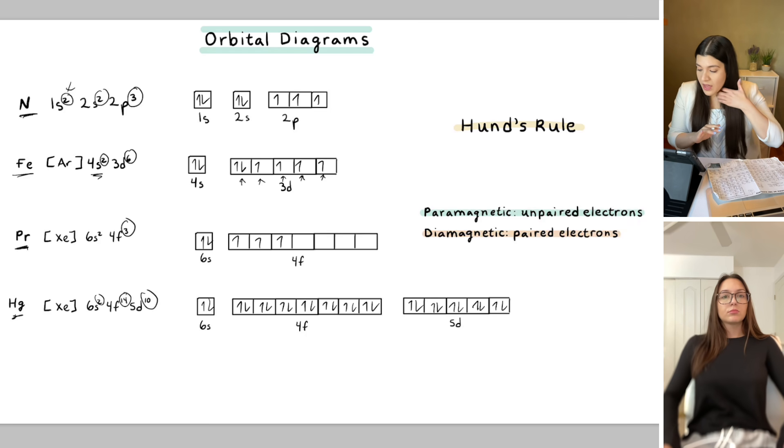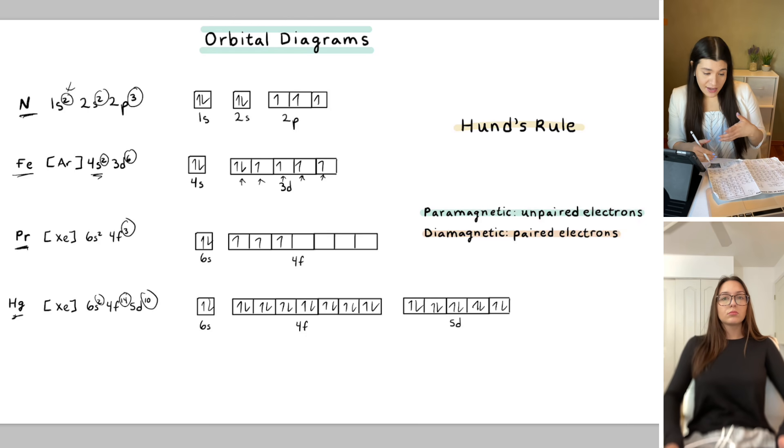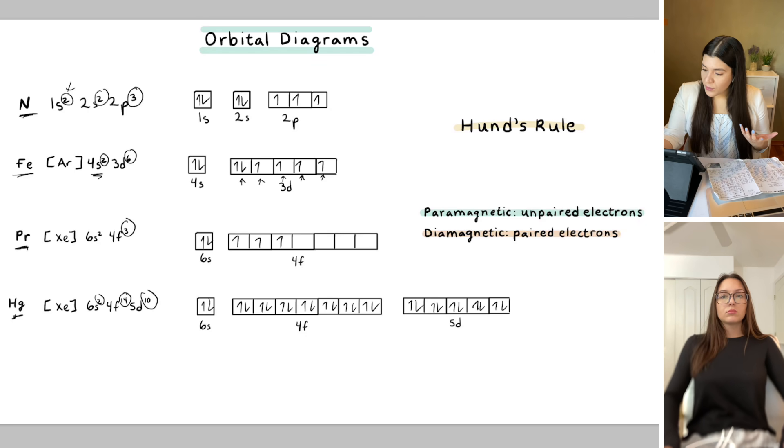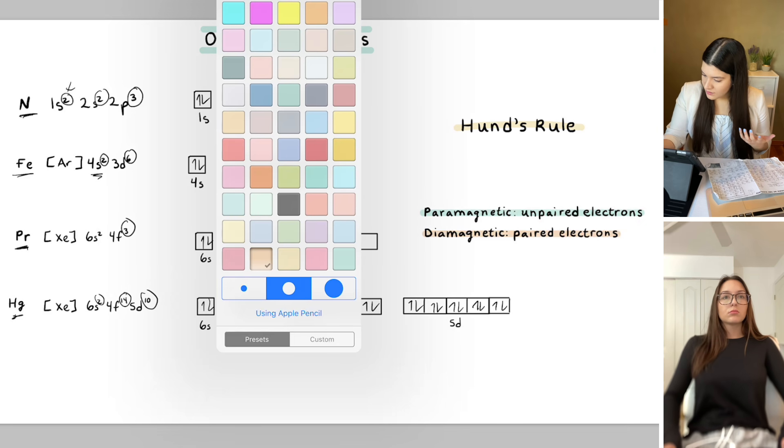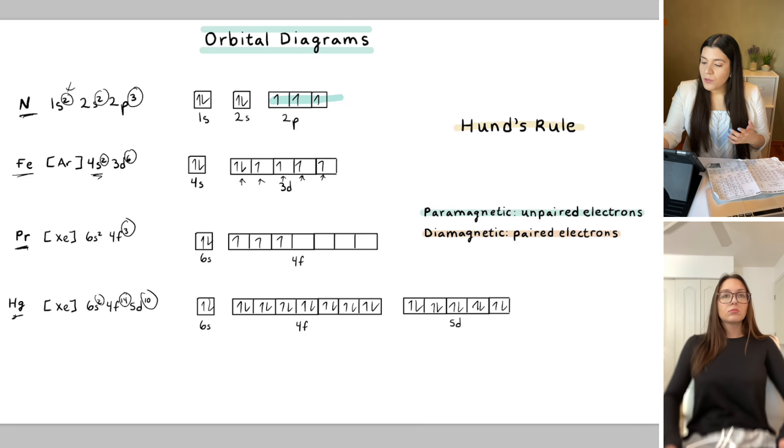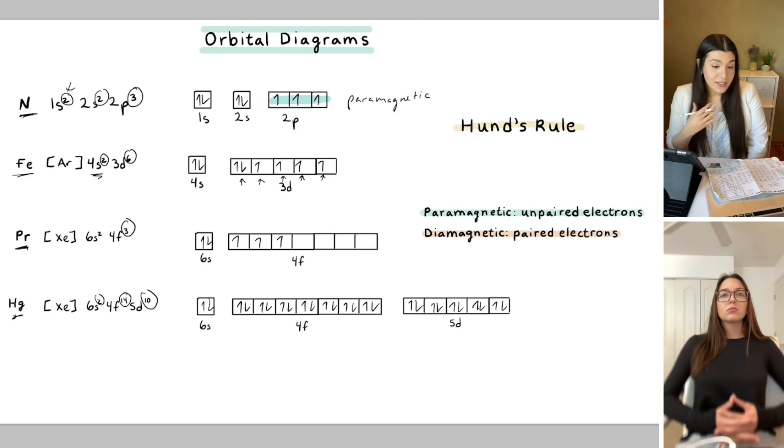So that was just Hund's rule. The other little things that you're going to have to know are certain terms known as paramagnetic and diamagnetic. And this is just talking about the electrons. So looking at this first one, we would see that the electrons are not paired, right? They're unpaired electrons. So that would be paramagnetic. And I know it's kind of tricky with the name because you think, oh, pair, so like para, maybe that's a pair. That's not true. So it would actually be dia or di meaning two, that actually means paired electrons.